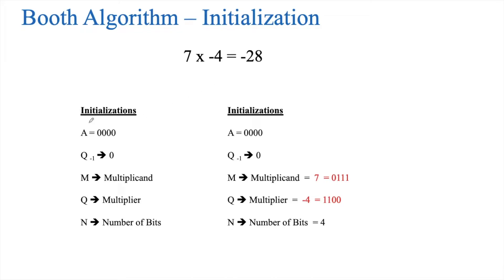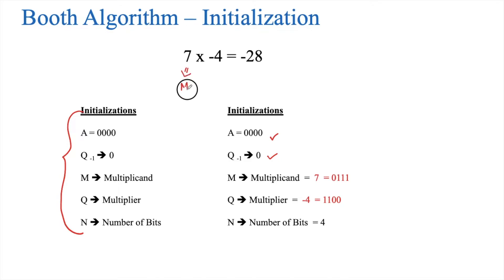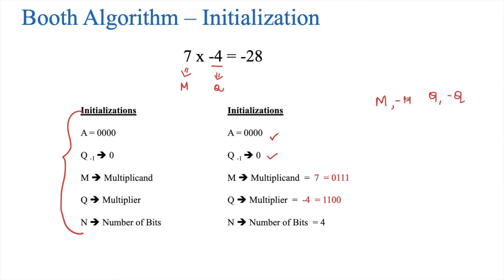For our consideration, we have taken 7 times minus 4, which should result in minus 28 — a positive number multiplied by a negative gives a negative number. We already know we have to make a few initializations: A equals all zeros, Q minus 1 equals 0, M is the multiplicand, Q is the multiplier, and N is the number of bits. For performing signed multiplication, we have to do some precalculations: we need to know what M is, what minus M is, what Q is, and what minus Q is.